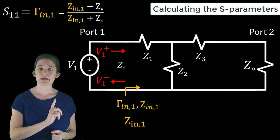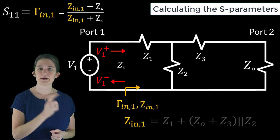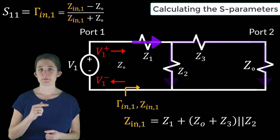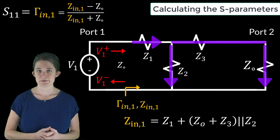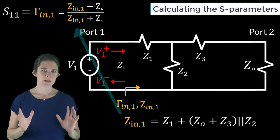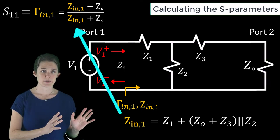The input impedance to the system looking into port 1 is given by this equation: Z1 plus the combination of Z0 and Z3 in parallel with Z2. We can plug this into the equation for gamma in1 to obtain S11 for this network.